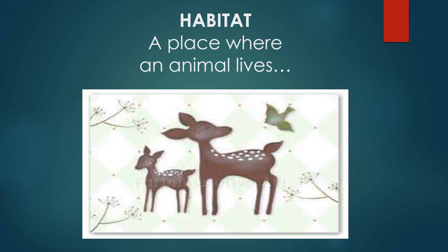Habitat is a place where an animal lives. Animals are found all over the world - some live in hot places, some in cold places, some in high mountains, some in deep oceans. The natural surroundings where an animal lives is called its habitat. For example, the camel lives in a desert, so we say the habitat of a camel is a desert.